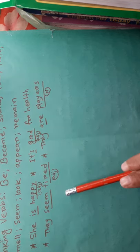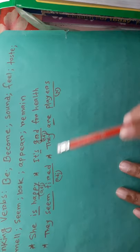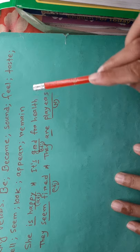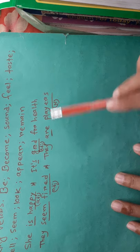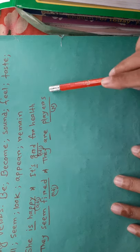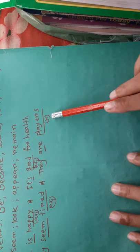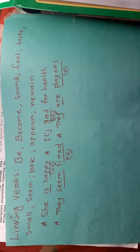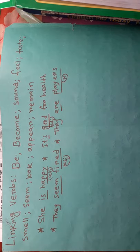After linking verbs, we use an adjective or any noun as a complement. For example: 'They are players' — after 'are,' we use the noun 'players.' So linking verbs are verbs that connect the subject with adjectives or with nouns.